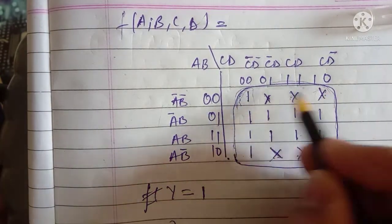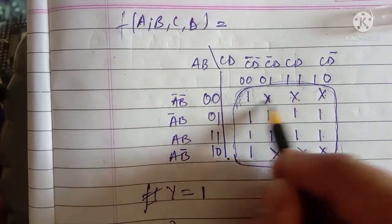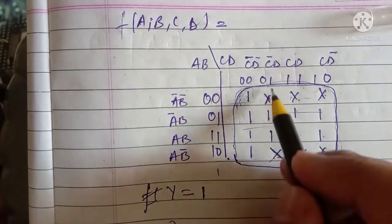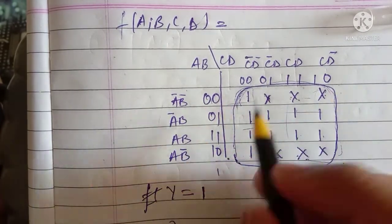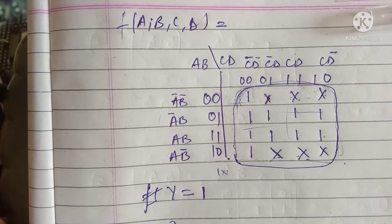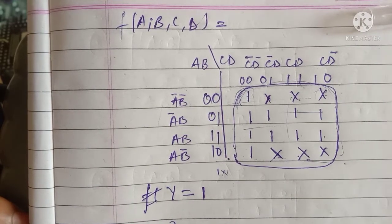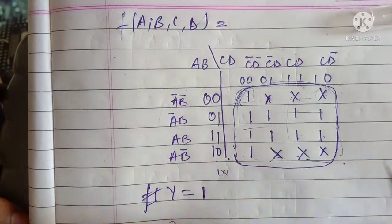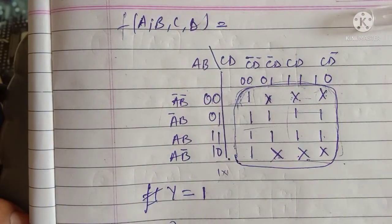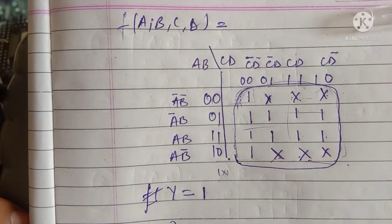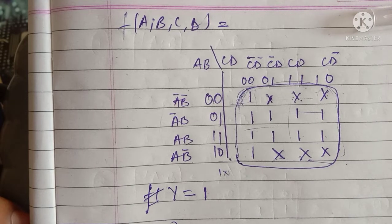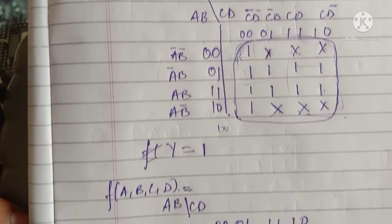In the row-wise direction there is no change — nothing varies, meaning it's one. In the column-wise direction also there is no common change — it's one into one, which is one. Since nothing is common in either row or column direction, the answer will simply be one. We'll now see another example of a four-variable K-map.